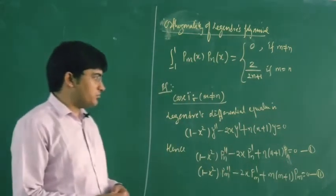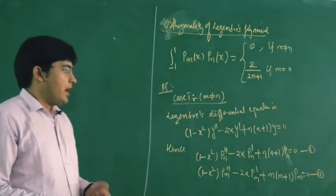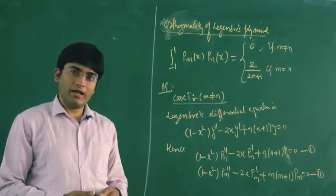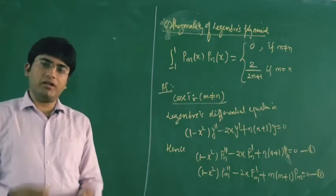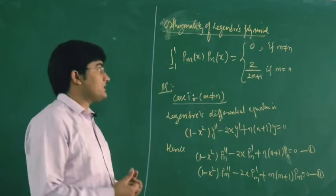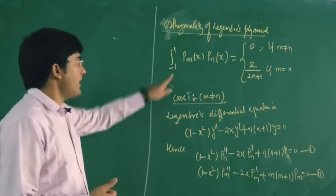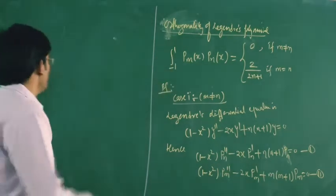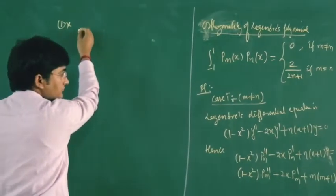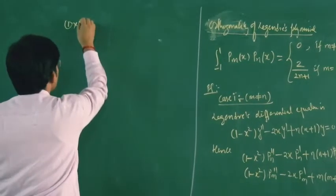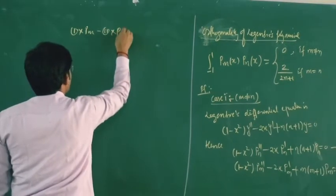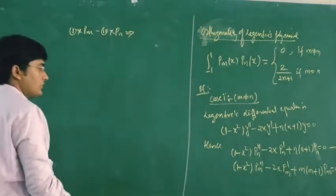Let us multiply equation number 1 by P_m and equation 2 by P_n, then subtract, and finally integrate the resultant equation with respect to x from minus 1 to plus 1.